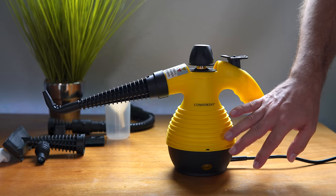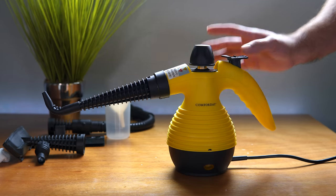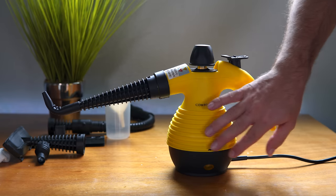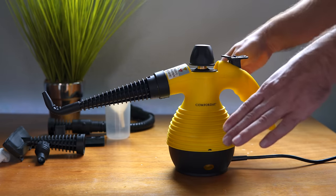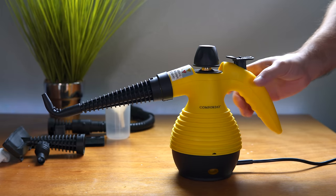The reason for that is because if it stayed on the whole time, it would overheat too much and have to release it through the cap here. But the pressure release on the cap is just an emergency - in case something happens down here, it'll release it from the top to the sides. Now that we know this thing works really nice, let's go see if we can steam clean some stuff.